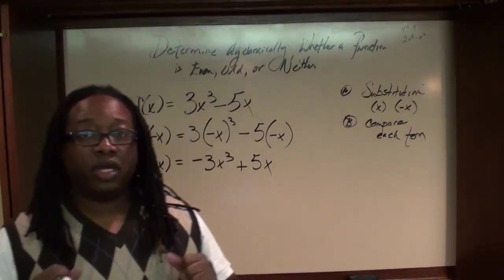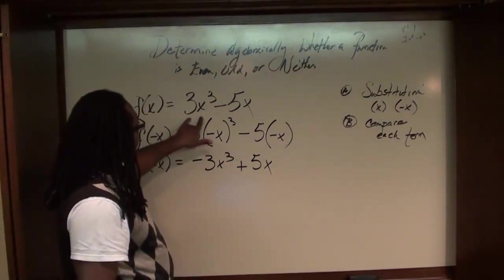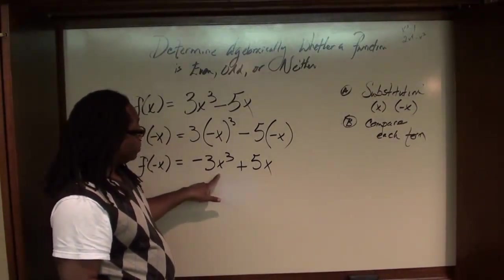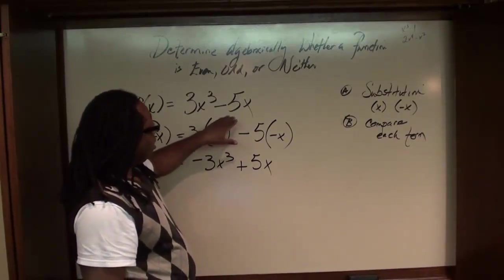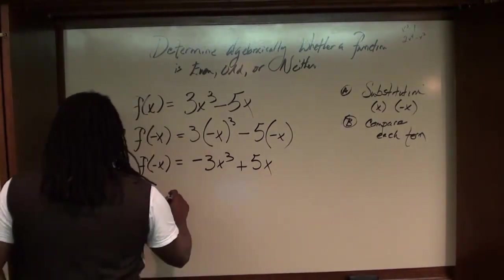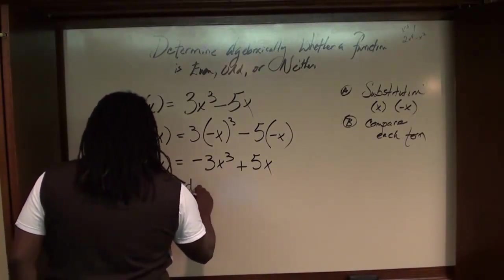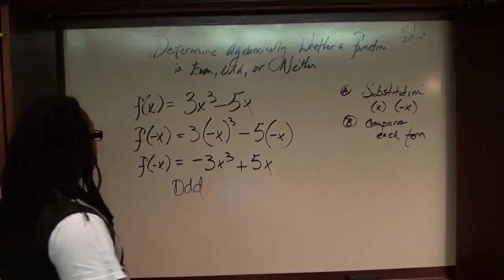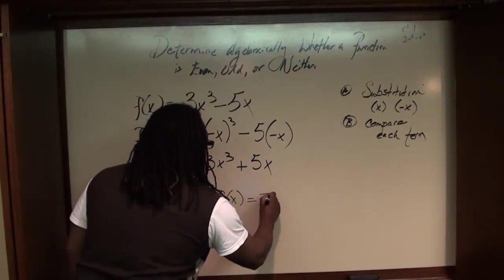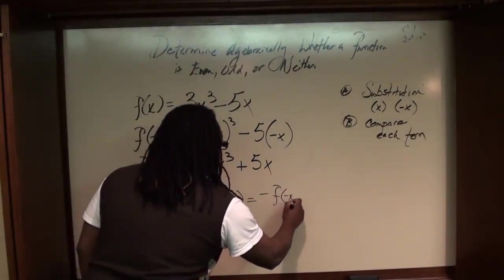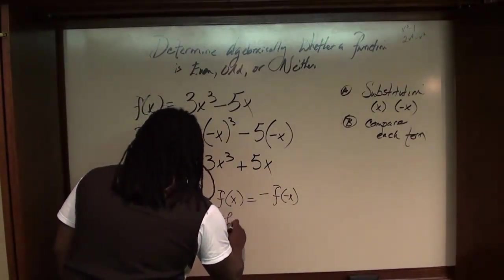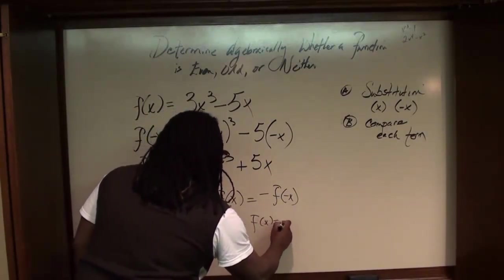Now we compare each term. Looking at the first term: 3x cubed is exactly opposite of negative 3x cubed. Looking at the second term: negative 5x is exactly opposite of positive 5x. So therefore this function is odd. To write this out, f(x) equals negative f(-x), meaning f(x) is the exact opposite of f(-x), so the function is odd.